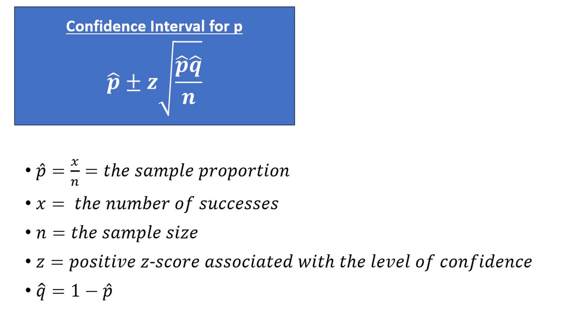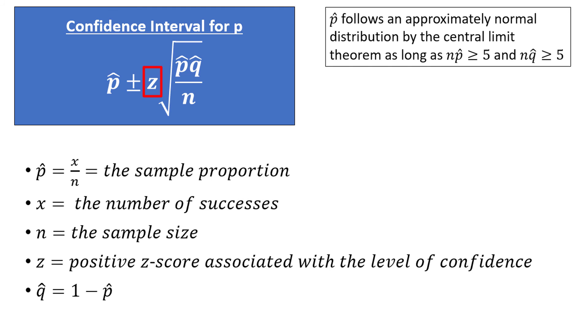There are a few things to notice about this confidence interval. First notice that we are using the standard normal z distribution. This is allowable as long as n times p-hat and n times q-hat are both at least equal to 5. Some textbooks say that they should even be at least equal to 10. This is similar to the requirement that n be greater than or equal to 30 in the one-sample mean confidence intervals.